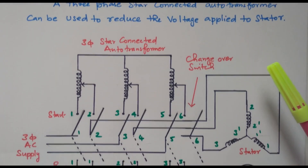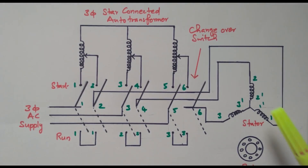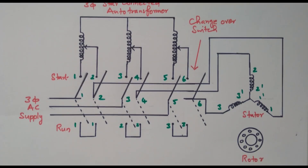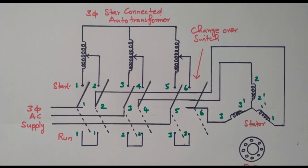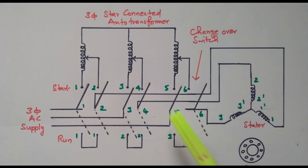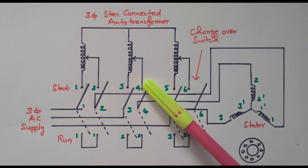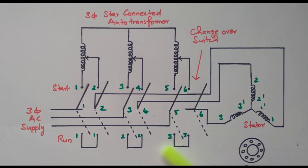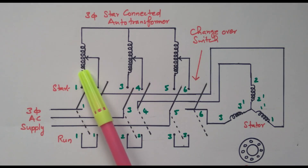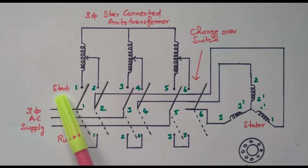Now I will go to the diagram. Here we have a three-phase induction motor with a stator and a rotor. We also have a star-connected auto-transformer and a changeover switch. One side of the changeover switch is connected to the auto-transformer — this is called the start position. The other side is connected to the run position.